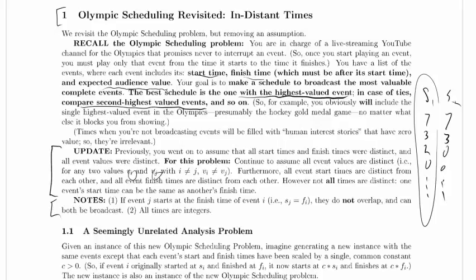Furthermore, all event start times are distinct from each other, so si is not equal to sj if i is not equal to j, and all event finish times are distinct from each other. However, not all times are distinct. One event's start time can be the same as another event's finish time.